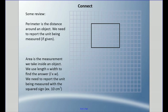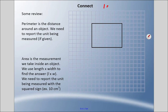I think we need to do some review here. Perimeter — if you're sitting there like 'oh my goodness, perimeter, area, I don't remember this' — these are topics you probably encountered in grade four. Perimeter is the distance around an object or a shape, and we need to report the unit being measured if one is given. Let's assume each one of these squares is one centimeter — a one centimeter grid.